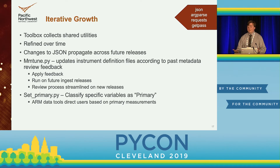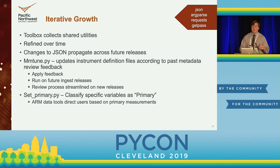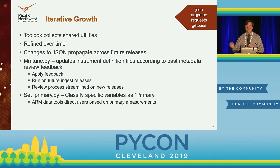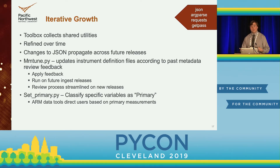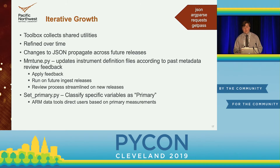A couple of the helper scripts we created: mmtune.py, which updates instrument definition files according to past metadata review feedback — new feedback from reviewers is applied into the script, then the script is run on all future and updated ingests, so the review process becomes streamlined over time. Another script we created was setPrimary.py, which interfaces with a database API to classify certain variables as primary measurements. ARM data discovery and archival tools can direct users based on the most important measurements to help them find the data they're most interested in. For this stage, we used JSON for reading definition files, argparse for handling command line arguments, the requests library to make calls to the APIs, and getpass for handling user credentials.